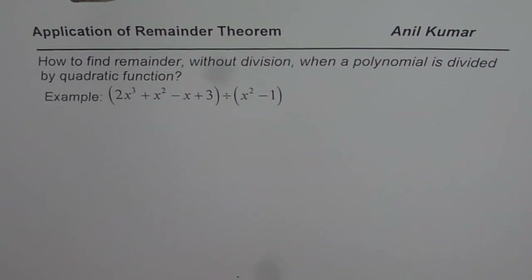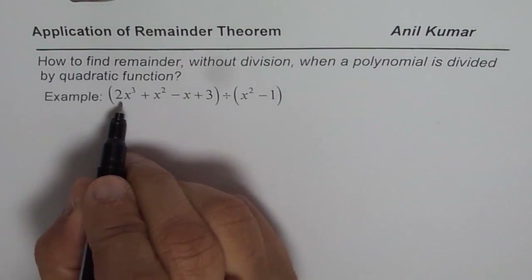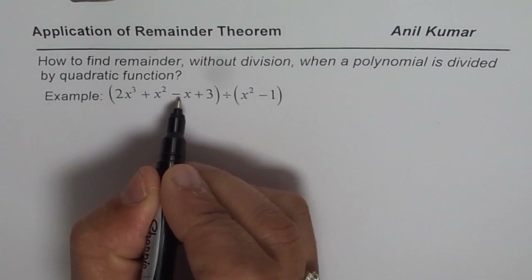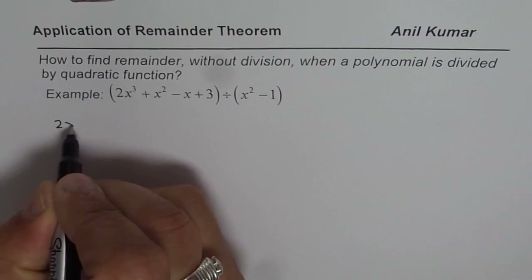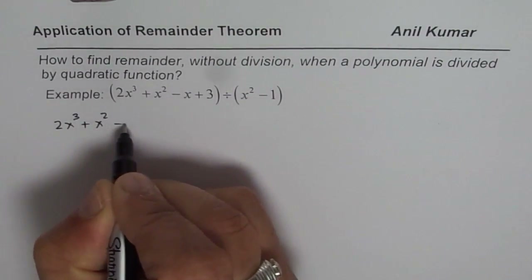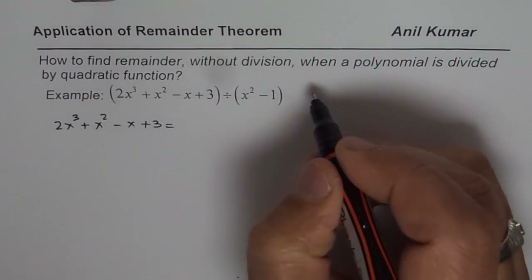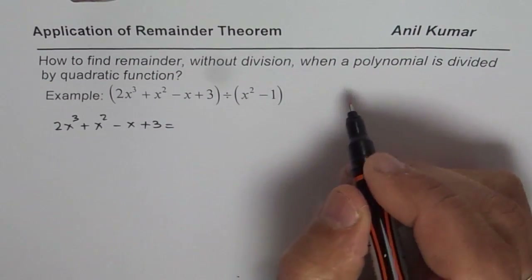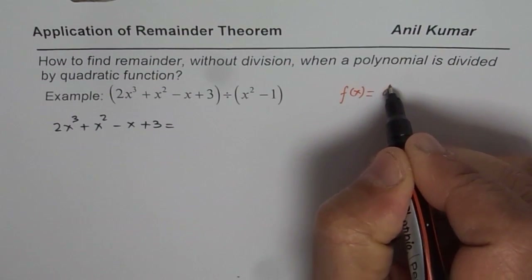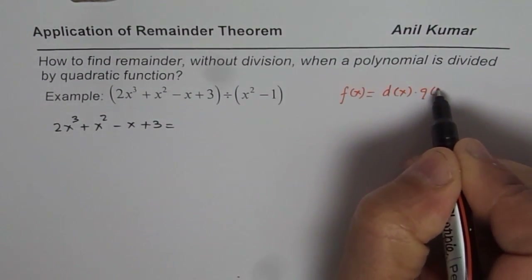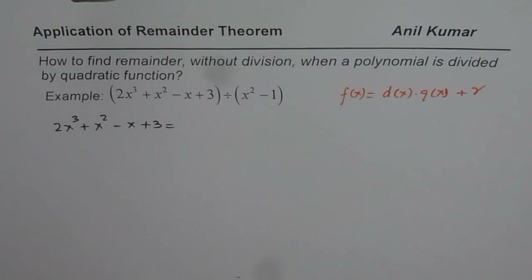We can use the division statement to solve this particular question. The division statement says that f(x) is equal to the divisor times the quotient plus the remainder. That is what the division statement is.